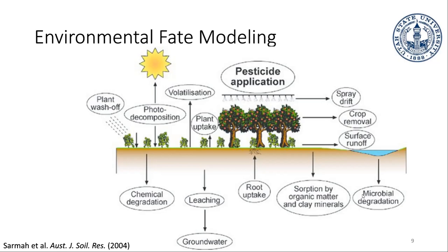The thing I focused on in my research is the photo-decomposition or photodegradation component — the process where sunlight is breaking down these chemicals. In my research group, there was already a model that predicted just the volatilization component, predicting how much of the chemical makes its way into the atmosphere. But in order for this model to actually be more applicable and usable in the real world, we don't want to just focus on one thing — we want to focus on as many of these processes as possible.